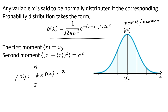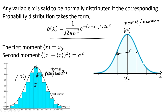The variance, which is the average value of (X minus X-bar) squared, gives σ². This σ is related to the full width at half maximum of the distribution. The nth moment of the distribution is written as the integral of X^n · ρ(X) dX from minus infinity to plus infinity.